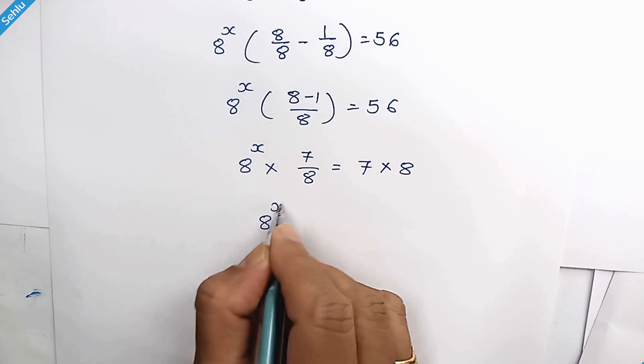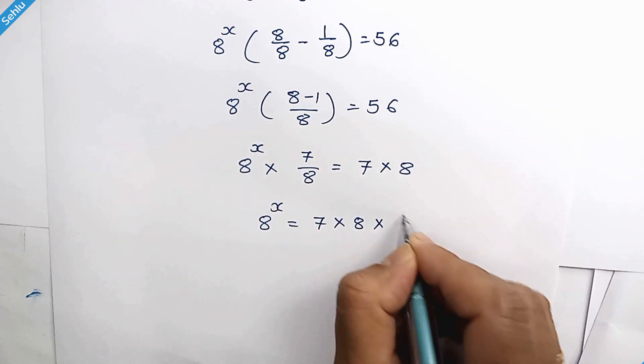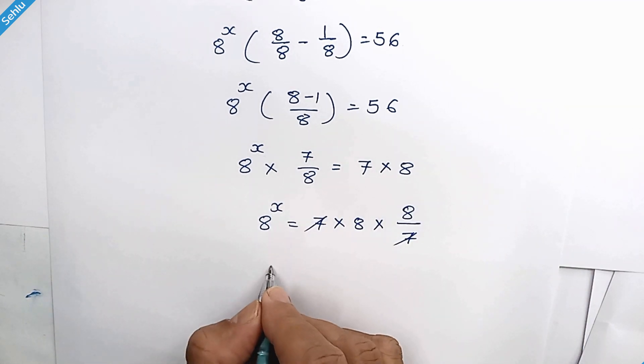So it will be 8 to the power x is equal to 7 multiplied by 8 multiplied by 8 over 7. These get cancelled out.